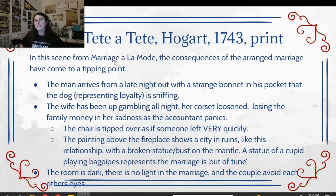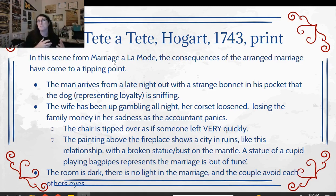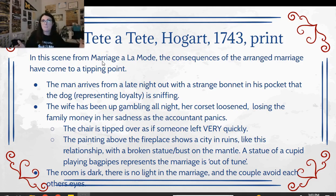The wife's corset strings are loosened — she's obviously been up all night, yawning, with cards at her feet showing she's been gambling because she's bored and neglected, and probably cheating too. Their accountant is horrified they're losing money. The chair is knocked over like someone left quickly when the husband came home. Above the fireplace is a painting of a city in ruins — basically this marriage is in ruins. There's a Cupid playing bagpipes out of tune, like this love is incredibly out of tune. The room is dark with no light in the marriage and the couple can't even look at each other. If you didn't know any better you'd think it's the upper class having a good time — it looks Rococo. But it is satire — Hogarth using satire to poke fun at arranged marriages, taking the upper class and making fun of them to comment on their really bad upper class traditions.